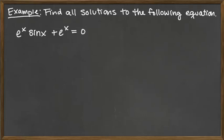In this example, we will be looking for all solutions to the following equation. The equation that we have here is e to the x times sine of x plus e to the x is equal to 0.